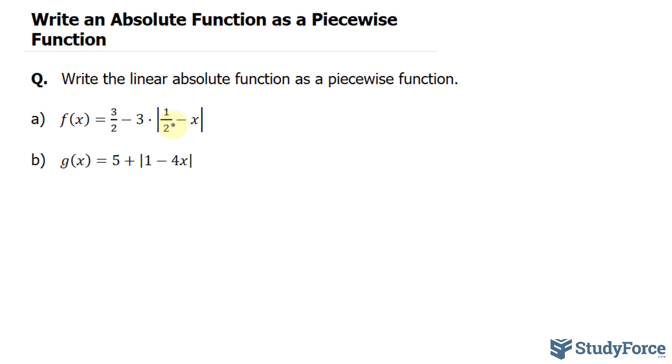Now, every absolute expression, in this case it's 1 over 2 minus x, can be represented in two ways. It can be represented as negative, and then you write the expression within parentheses, or the expression itself without the negative.